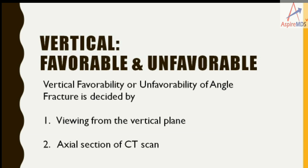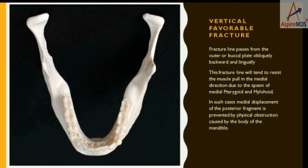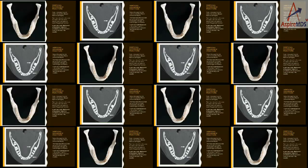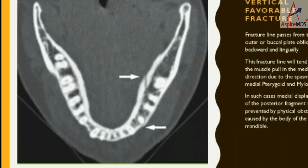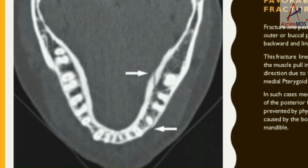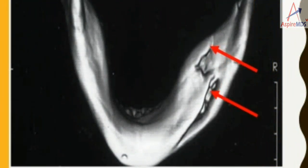Vertical favorability or unfavorability is assessed from the vertical plane, such as the axial section in CT. In a vertically favorable fracture, the fracture line passes from the buccal to the lingual side in a posterior direction, such that the muscle pull will not cause displacement. In this axial scan, we can see the posterior lingual direction of the fracture line from buccal to lingual side, which does not cause displacement — confirming it is a favorable fracture. The same can be seen in this 3D CT view from the inferior side of the mandible.